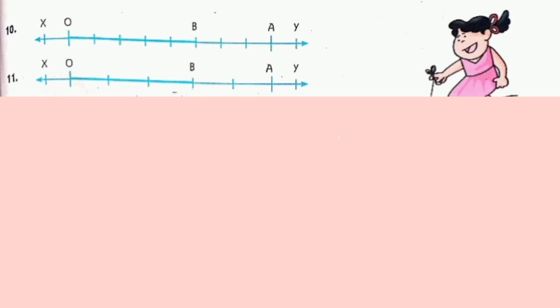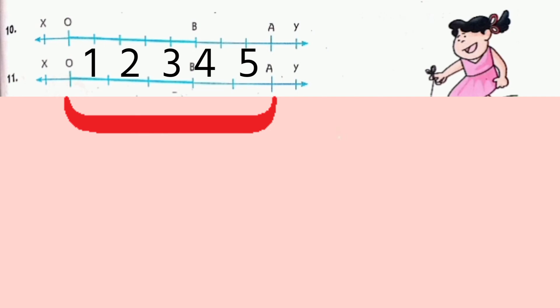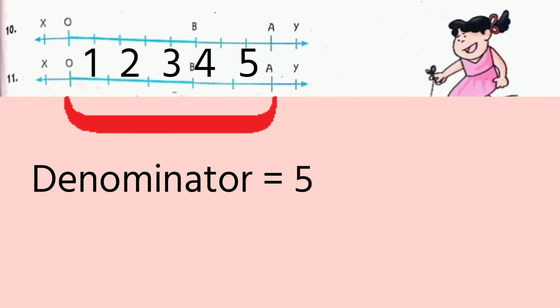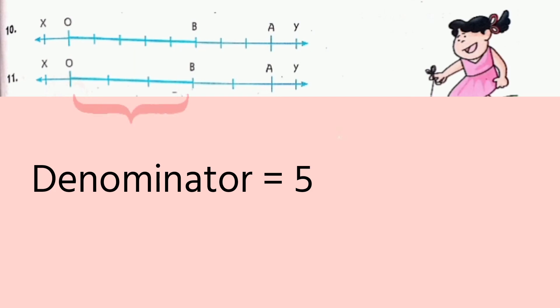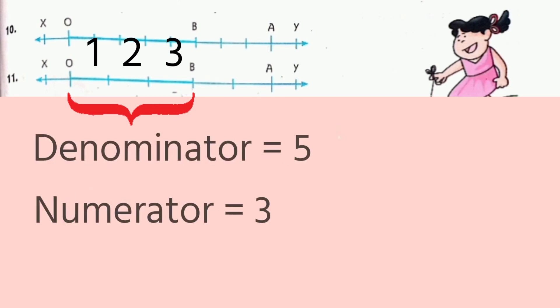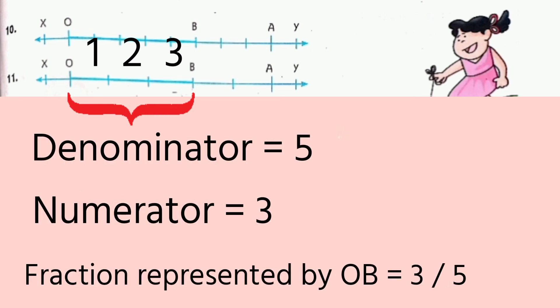Let us move on to question number 11. Again, on the number line XY, there are 2 points O and A. Let us find out in how many parts OA is divided: 1, 2, 3, 4, 5. So 5 will be our denominator as OA is divided into 5 equal parts. How many parts are represented by OB? 1, 2, 3. OB has 3 parts, so we have to consider 3 parts out of 5 parts. Therefore, the fraction represented by OB on this number line will be 3 by 5.